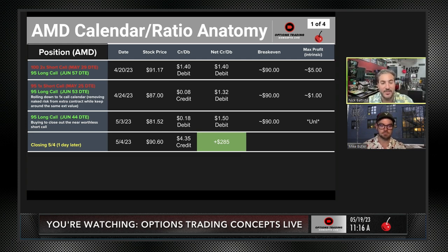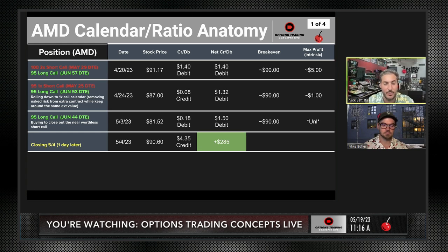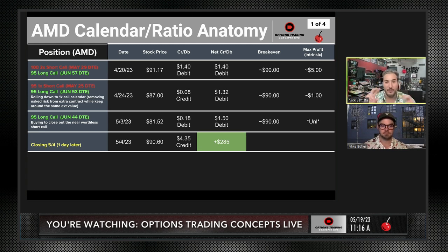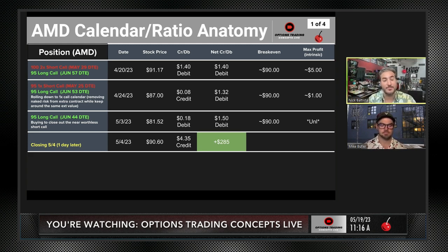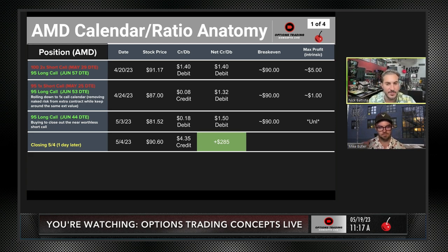The ratio aspect of this means that you're naked one extra call. You've got one of your short calls at the 100 strike covered by the 95 - that's the defined risk portion of the trade. And then you've got that extra short call at the 100 strike, which is a naked position. If you want to do the more defined risk crab, you would go and buy a further out-of-the-money long option - say the 110 or 120 option in the May monthly expiration - that defines your risk on the entire position and gives you more of a butterfly risk profile. So this one is more of a ratio profile.